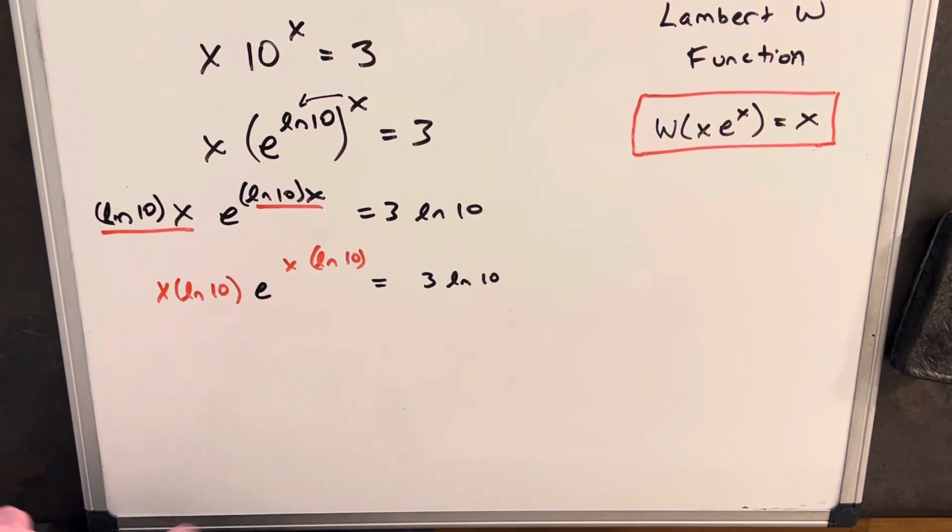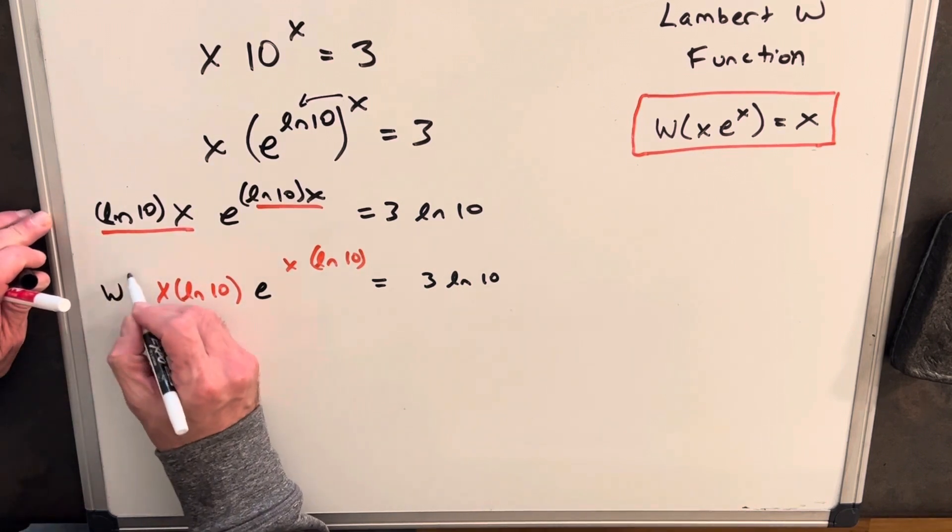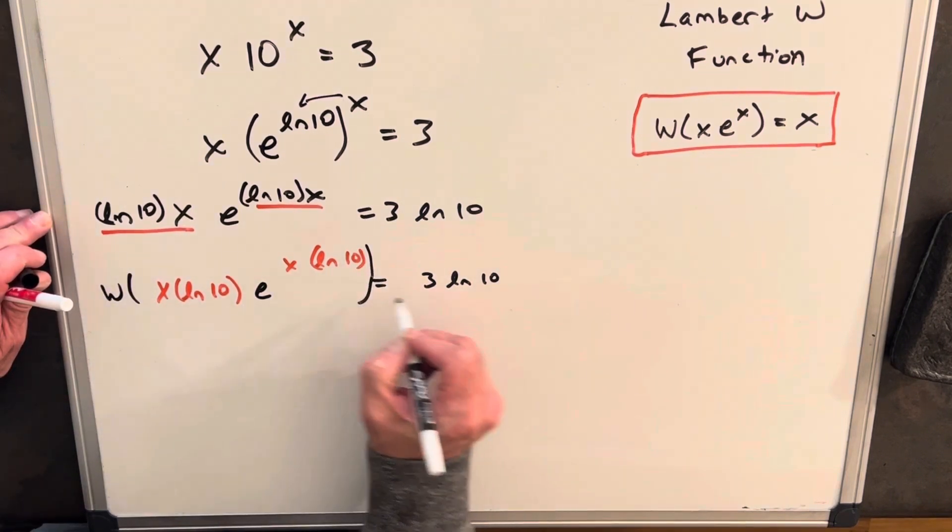Now that we're matching what's in red, we can use our Lambert W function. So we'll apply it on both sides.